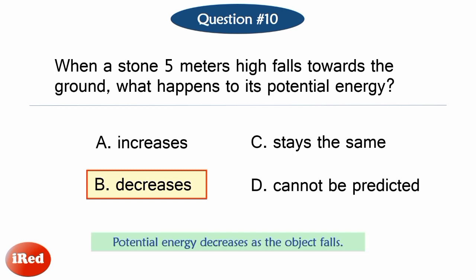The correct answer is Letter B. As the stone falls, its height or distance above the ground decreases. Thus, its potential energy also decreases as it falls.